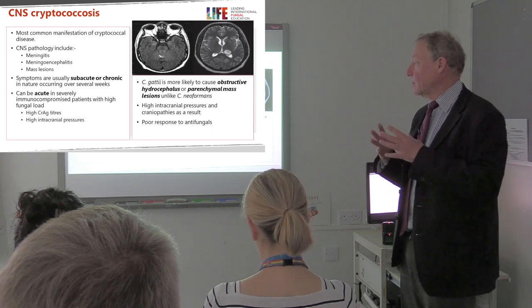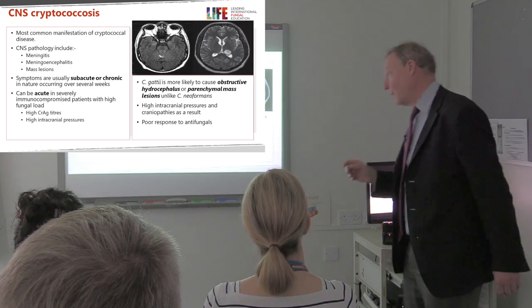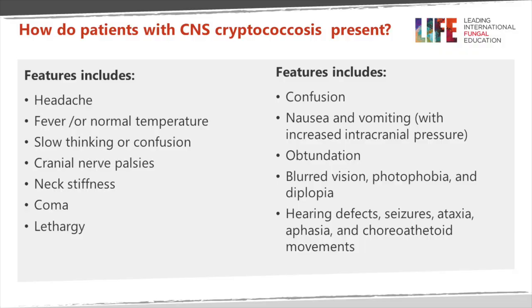Craniopathies are much more common with Cryptococcus gattii, the variety caught from eucalyptus trees, which tends to occur in non-immunocompromised patients. These patients present with headache, fever, slow thinking, occasionally cranial nerve palsies, neck stiffness, coma, and lethargy. Sometimes they're confused. Often they have nausea and vomiting, particularly associated with intracranial pressure. Blurred vision, photophobia, and diplopia can occur, though photophobia — common in bacterial meningitis — is uncommon in cryptococcal disease. More severe effects like hearing defects, seizures, ataxia, aphasia, and abnormal movements are quite rare.